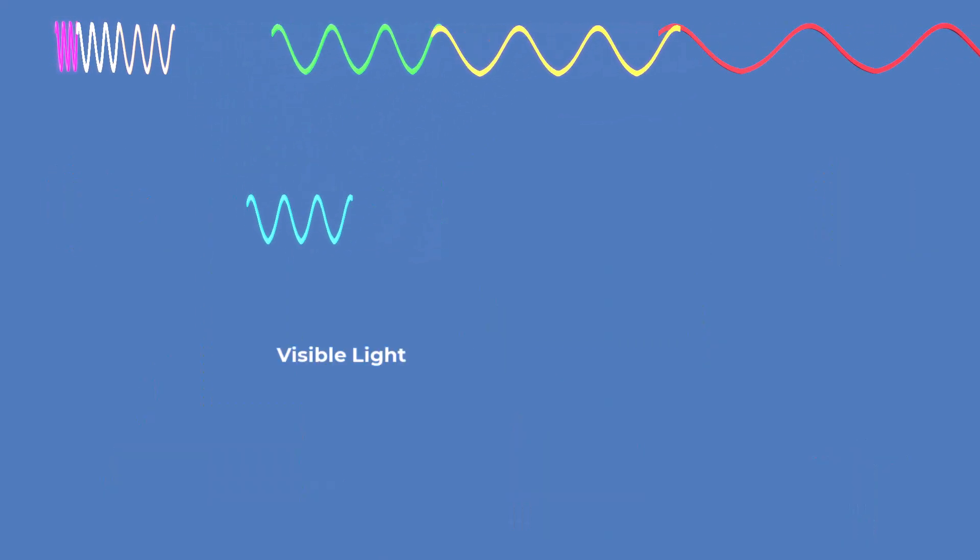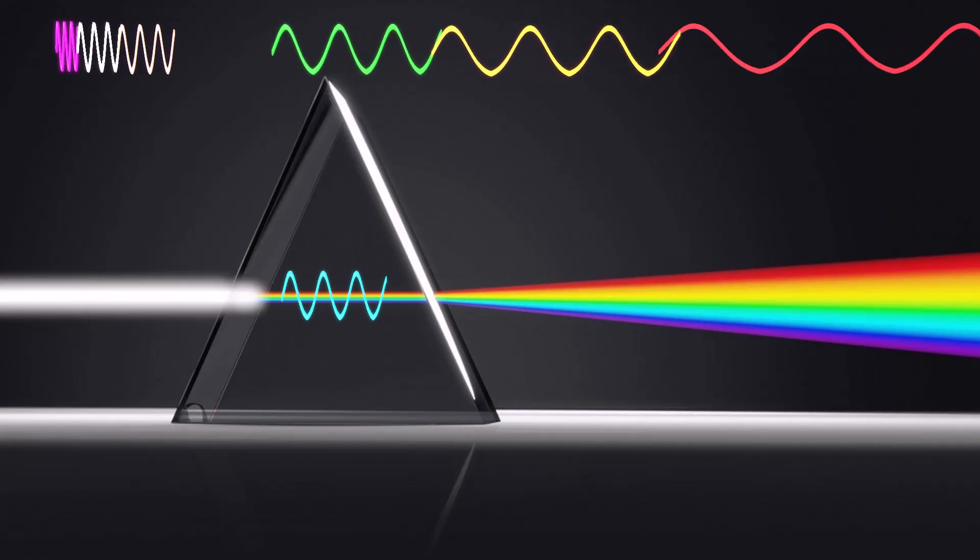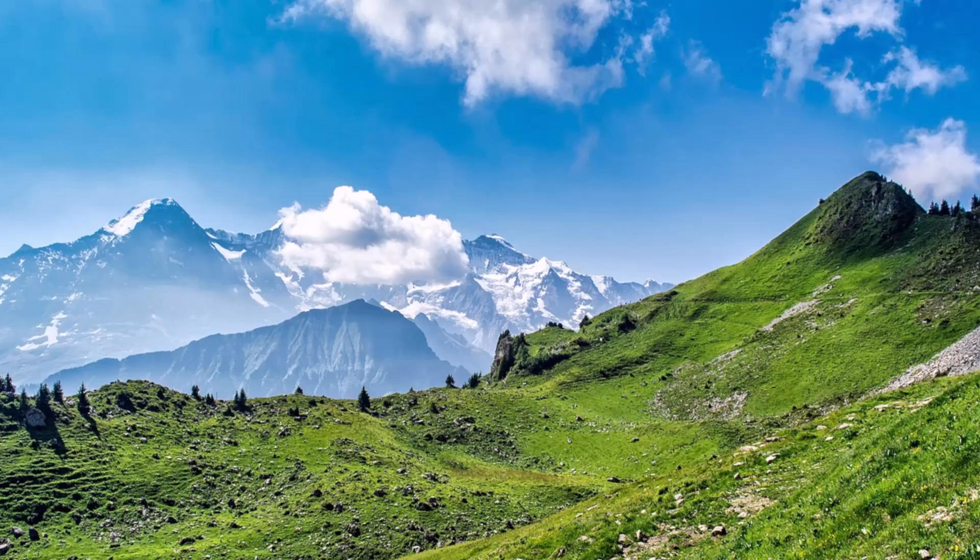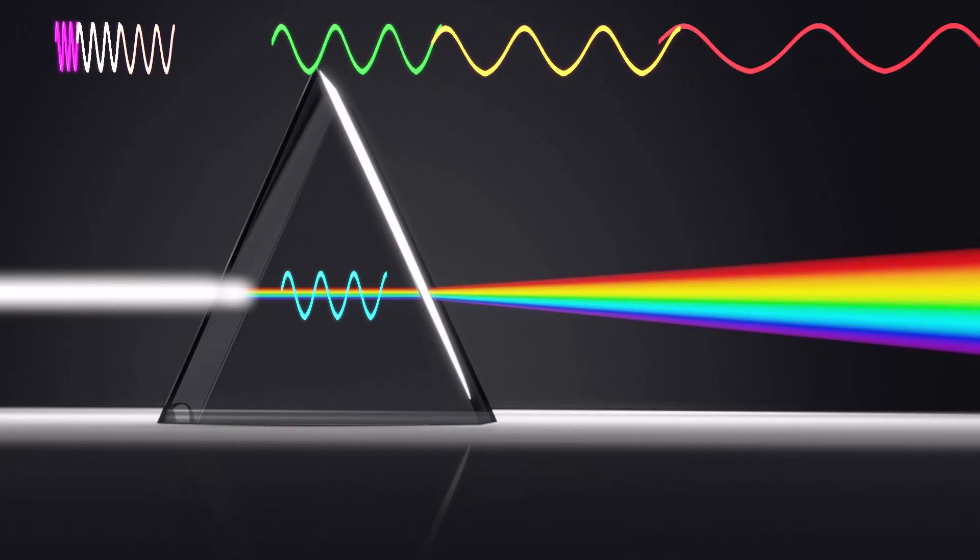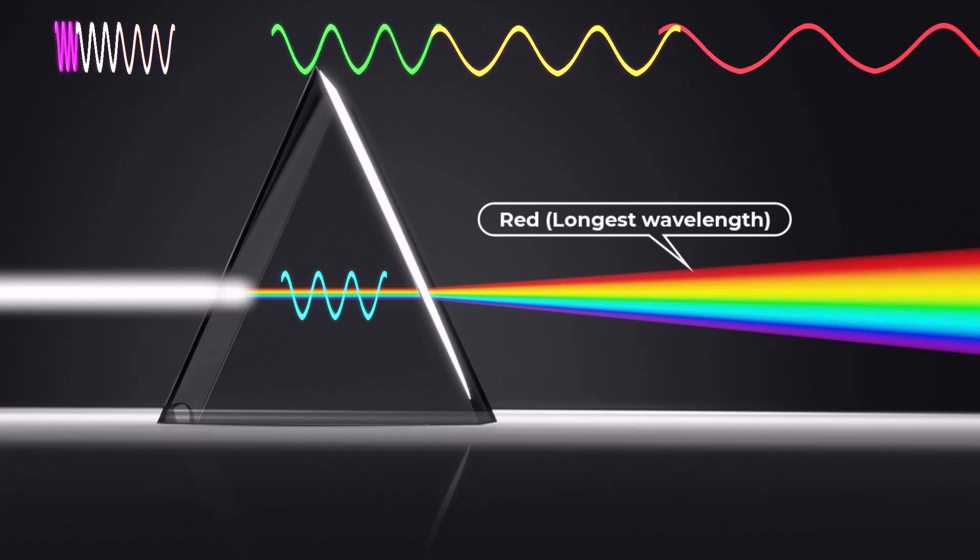After infrared comes visible light, the only narrow band of the spectrum that our eyes can detect. It allows us to see the world in all its vibrant colors. The range extends from violet, with the shortest wavelength, to red, with the longest.